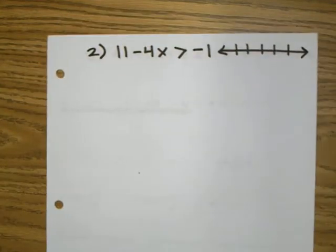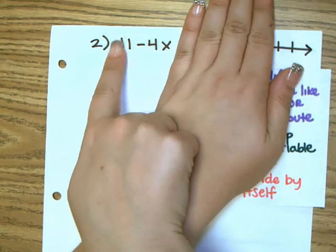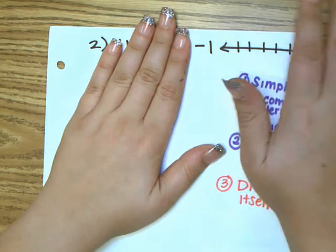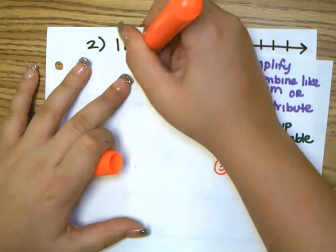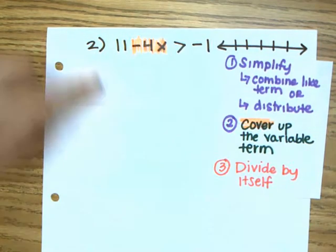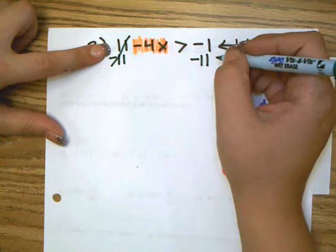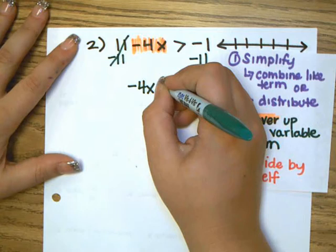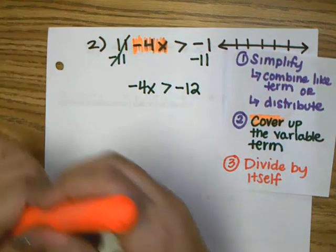Let's look at the next example. Using the same steps: step 1, simplify. On the left side I can't combine terms because one has an x and one doesn't. On the right side negative 1 is already by itself. Step 2, highlight the variable term, and get rid of the 11 by subtracting 11 from both sides. Negative 1 minus 11 gives negative 12.